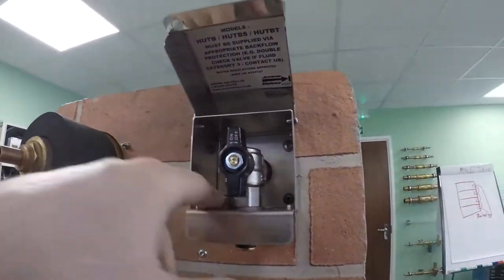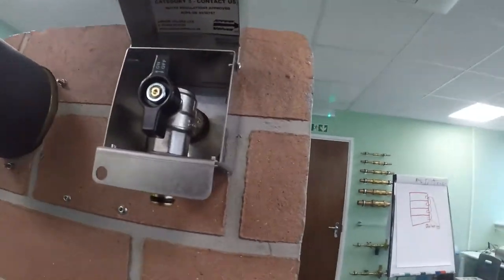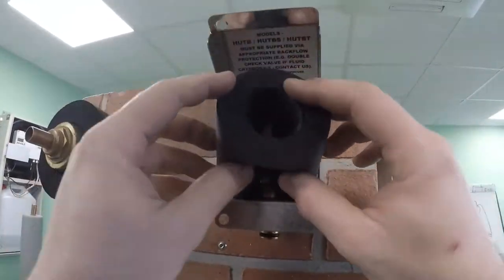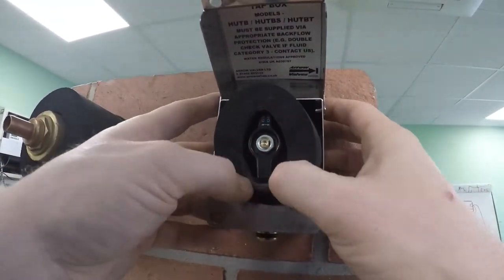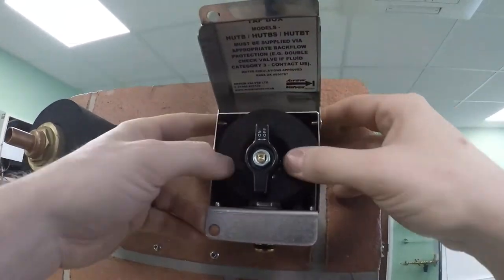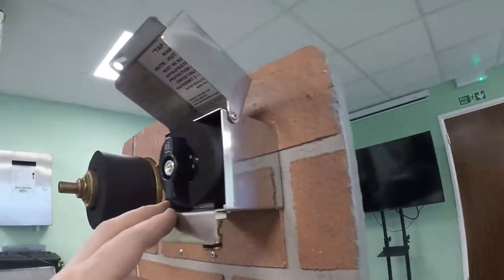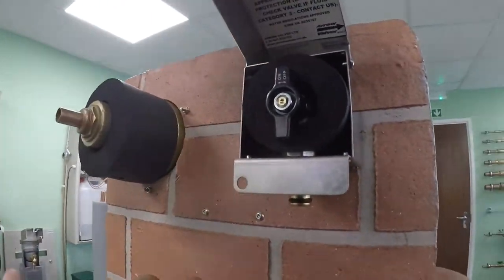Once you've got all four of your screws back together, turn your water back on and you should be leak free.